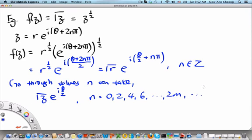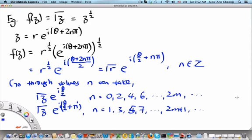Or you end up with √r × e^(i(θ/2 + π)) for n = 1, 3, 5, 7, and in general, odd integers. These two values are different. They're not the same.